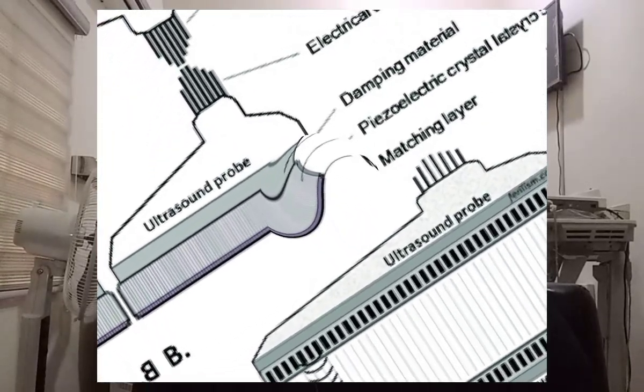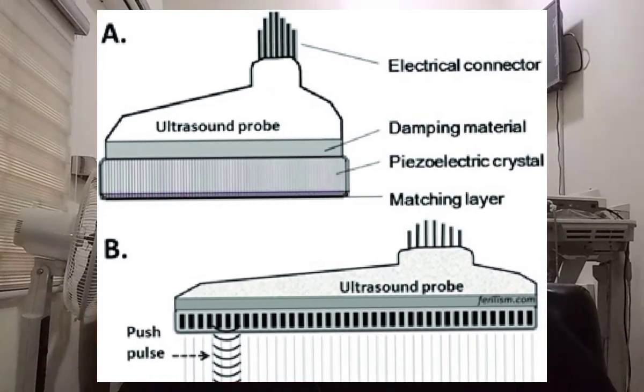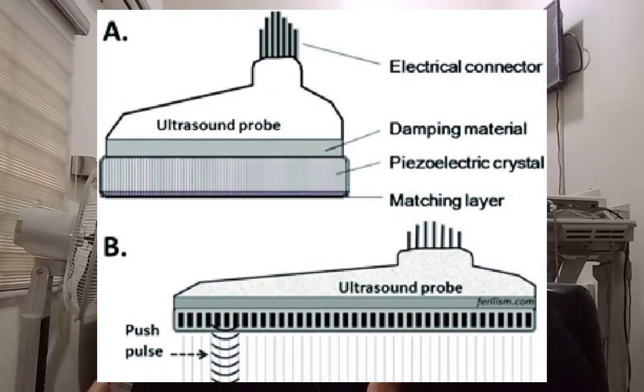In linear array transducers, a collection of active elements are arranged in a line. A linear array produces a sound beam by firing subgroups of elements — typically 8 to 10 elements — to produce the sound beam for each scan line. Each successive scan line is formed by switching or pulsing adjacent subgroups of elements in a sequential fashion along the length of the array.